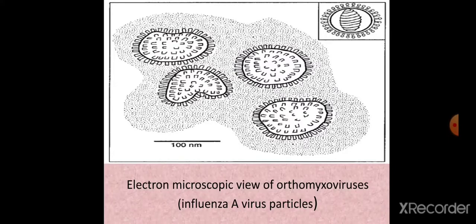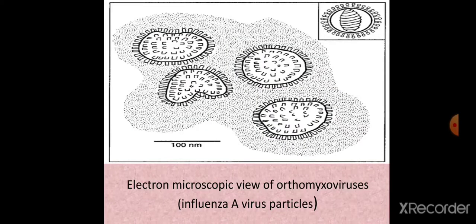Under electron microscopy, this is the view of orthomyxoviruses — specifically influenza A virus particles. You can see on the envelope the hemagglutinin and neuraminidase spikes, and an additional layer beneath the envelope. Inside, the helical symmetry of the nucleocapsid is visible. This is the electron microscopic structure of orthomyxoviruses.